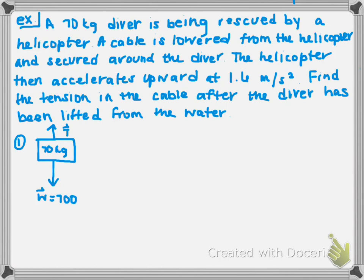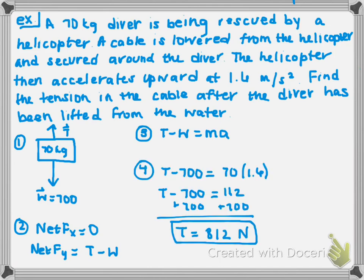Begin by drawing the free body diagram. There is no force acting on the object in the x direction, so the net force equals zero. There are, however, forces acting on the object in the y direction. Set that equation equal to mass times acceleration and solve for the unknown. In this case, that would be tension.